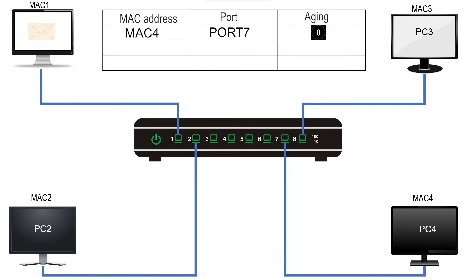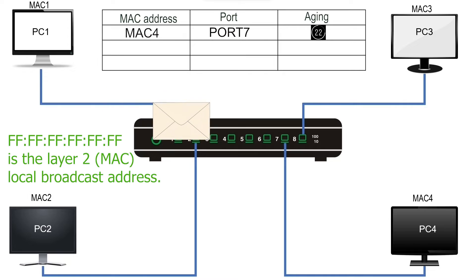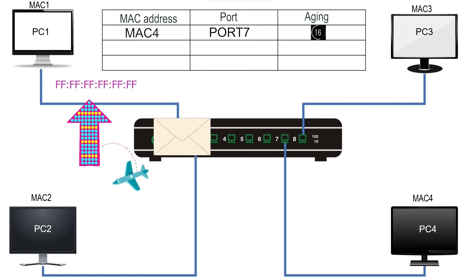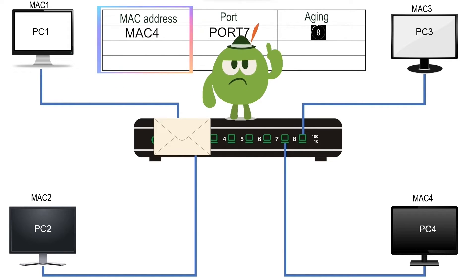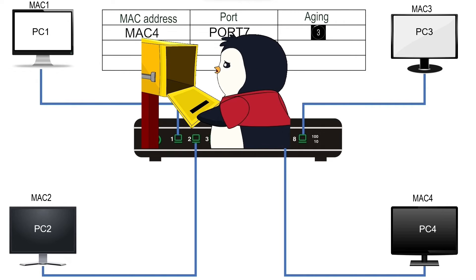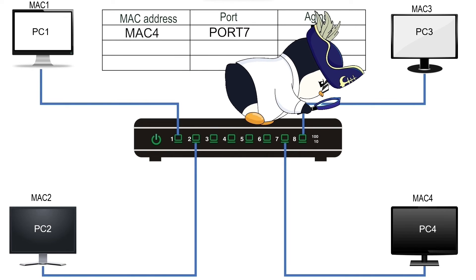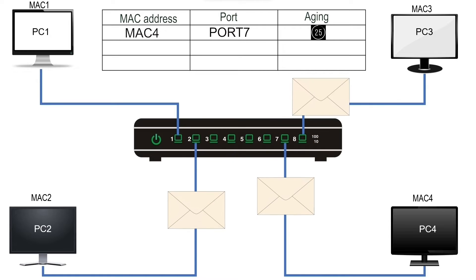Now suppose PC1 generates a broadcast frame with the broadcast address in the destination field. The frame reaches the switch on port 1. Since broadcast is a destination-only address, the switch never adds it to the CAM table. Finding no entry for the broadcast address, the switch decides to forward it from all ports. After checking the VLAN configuration and finding all ports have the default VLAN ID, it forwards the frame from all ports except the source port.